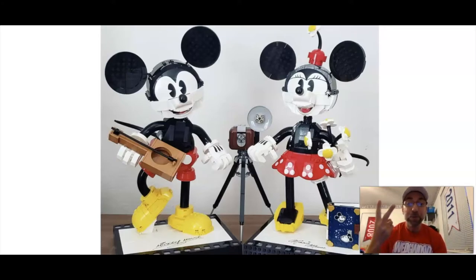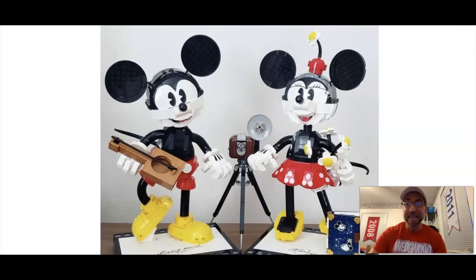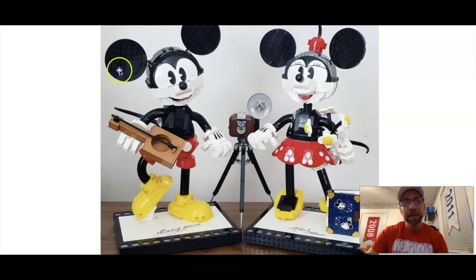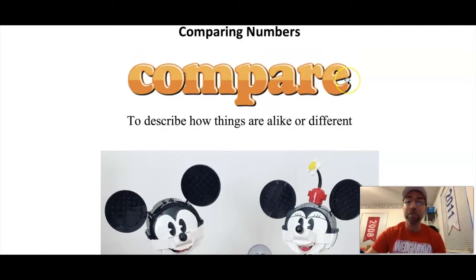Now I can also compare objects by telling how they are different, how they are not alike. Can you see anything that makes them different? One thing that I see is that Minnie has a hat and a flower coming out of her hat. Mickey doesn't have a hat at all, that makes them different. I see something else different, something that they're carrying. Mickey is carrying a guitar. Minnie is carrying flowers. I wonder if Mickey gave Minnie the flowers.